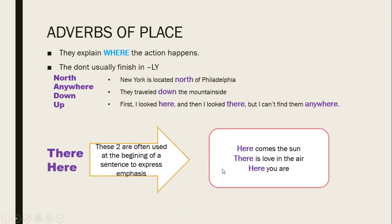Next, we have adverbs of place. When we're talking about places, we're talking about where. They say where something happened. These don't usually finish in L-Y. Here we have some examples: north, anywhere, down, up, there, here. Example sentences: 'New Jersey is located north of Philadelphia.' 'They travel down the mountainside.' 'I looked here and they looked there, but I can't find them anywhere.' Notice that we can have three adverbs in a single sentence — that is possible.